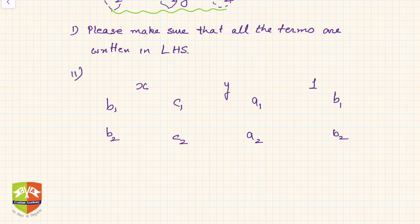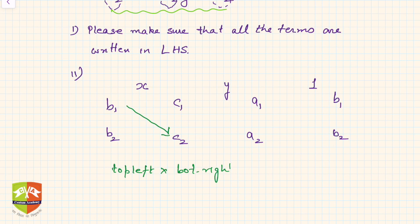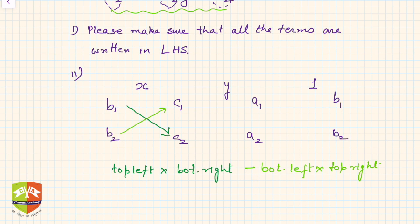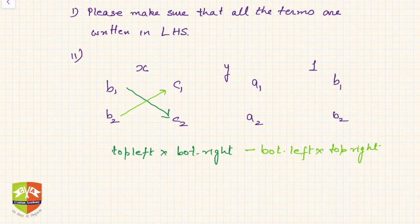Now remember: you multiply top-left into bottom-right first, and then bottom-left into top-right. This is the sequence — top-left times bottom-right first, then bottom-left times top-right. The same pattern applies across all the columns.